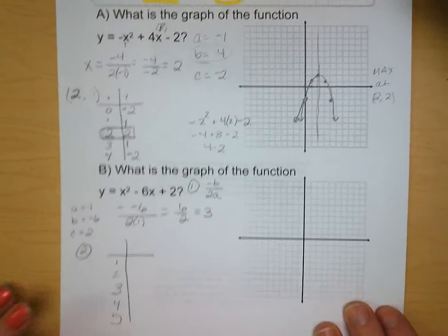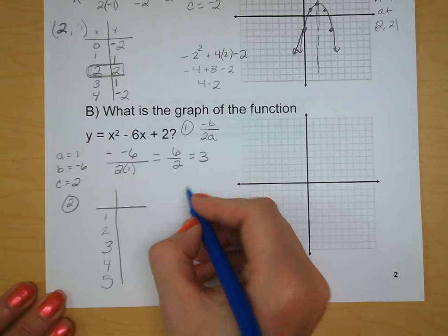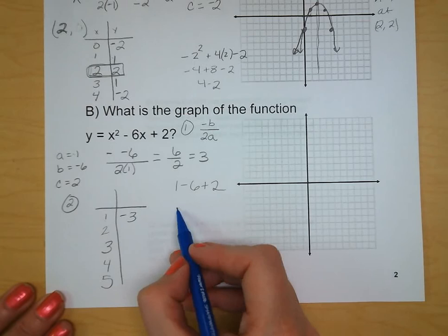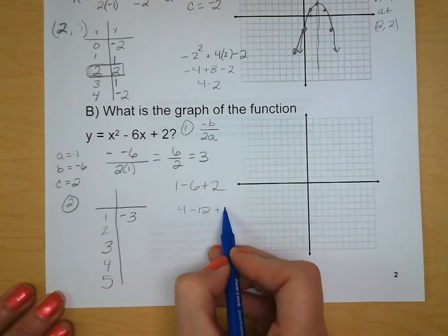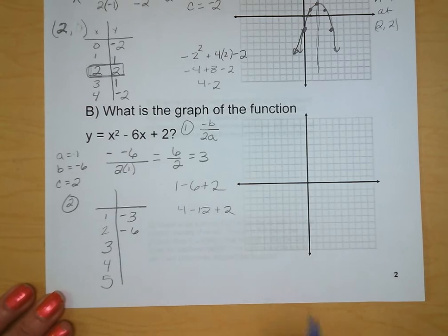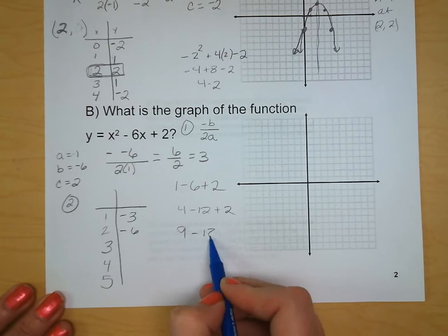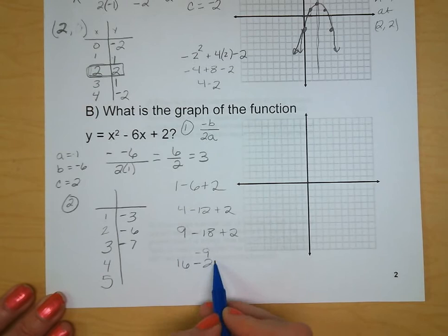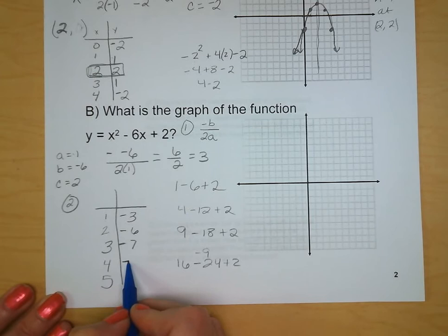Put in a 1, 1 squared is 1 minus 6 plus 2, negative 5 plus 2, negative 3. Plug in 2, 2 squared is 4 minus 12 plus 2, negative 8 plus 2, negative 6. Plug in 3, 3 squared is 9 minus 18 plus 2 is negative 7. 4 squared is 16 minus 24 plus 2, negative 6. 5 squared is 25, negative 3.